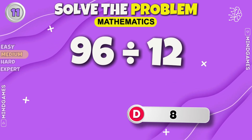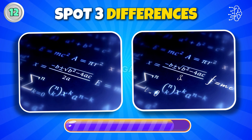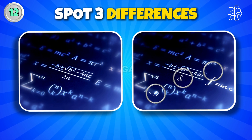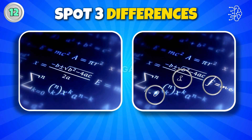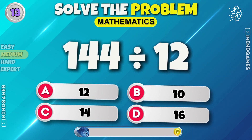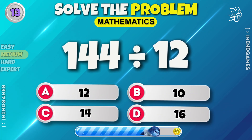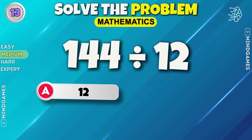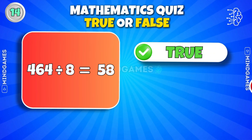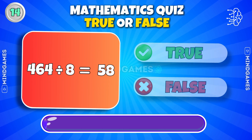It's eight. Spot three differences from the above pictures. One, two, three — how many did you spot? 12. 464 divided by 8 is equal to 58 — true or false? It's true.